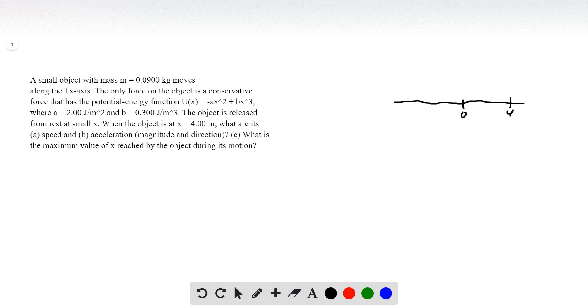First off, I'm going to say conservative force means that we're going to have conservation of energy between point 0 and point 4 here. So that means I can write potential energy at 0.0 plus the kinetic energy at 0.0 equals the potential energy at 4, x equals 4, plus the kinetic energy at x equals 4.